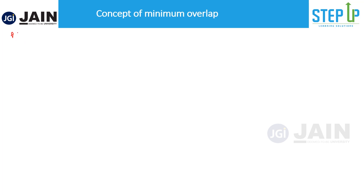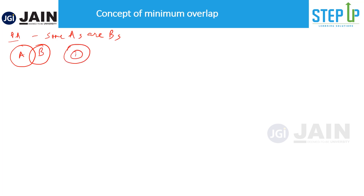If somebody says there is a particular affirmative statement, for example 'some A's are B's', there are four possibilities for this. You could represent it as A partially overlapping B, or A inside B, or B inside A, or A equals B — those are all four possible cases.